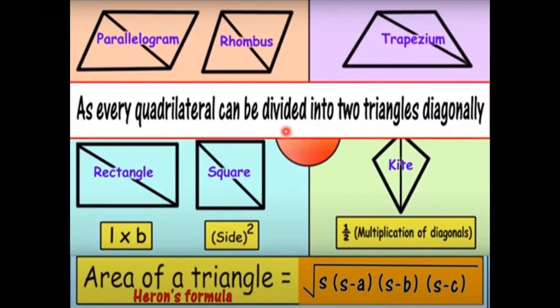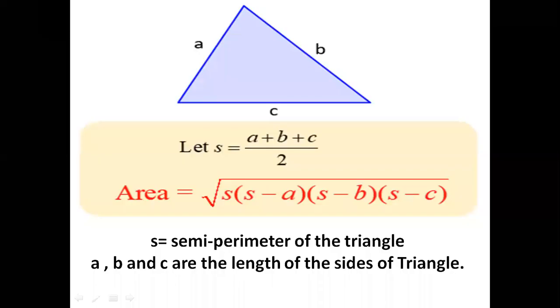Now, let us try to understand Heron's Formula in detail. To understand the formula, let us consider a triangle. Say the measures of the sides of the triangle are given as A, B, and C. The very first thing that you have to do to find the area using Heron's Formula is to find the value of S.